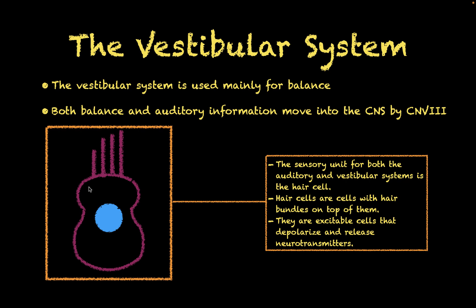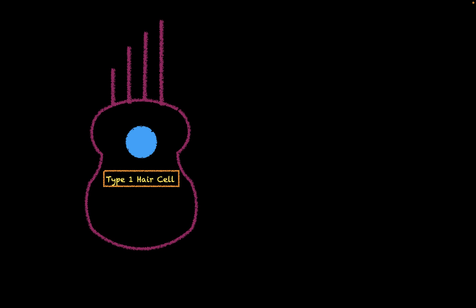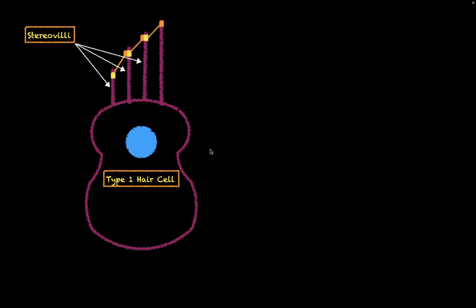So now let's take a closer look at what these hair cells actually do. There are two different hair cells we're going to talk about. The first is the type one hair cell, which is more bulbous at the bottom. The first important part is the stereovilli — hair fibers that protrude from the hair cell. The tallest of the hair fibers is going to be the kinocilium.